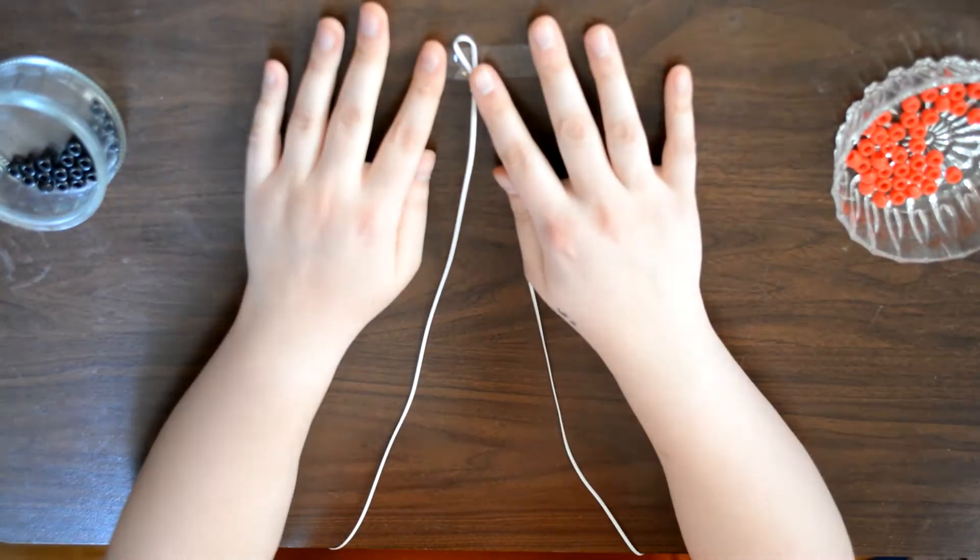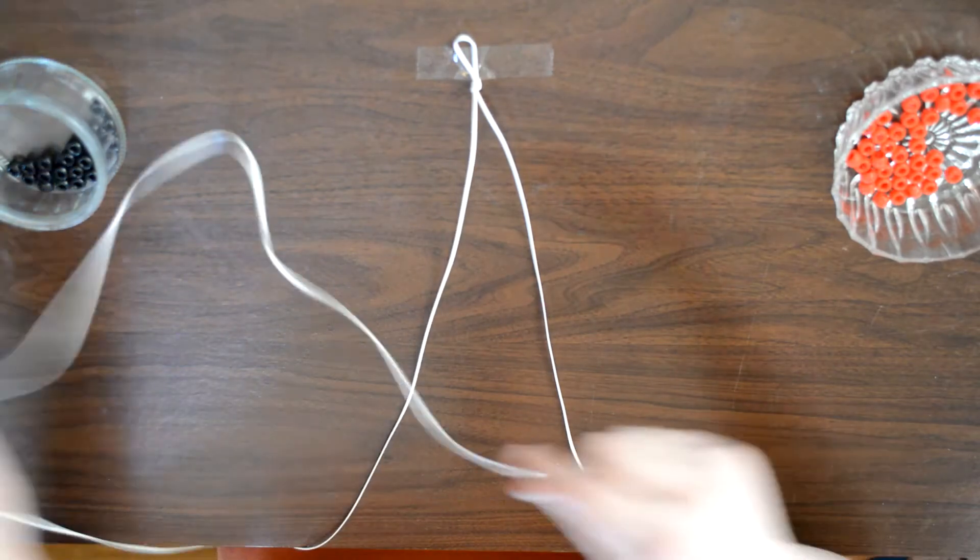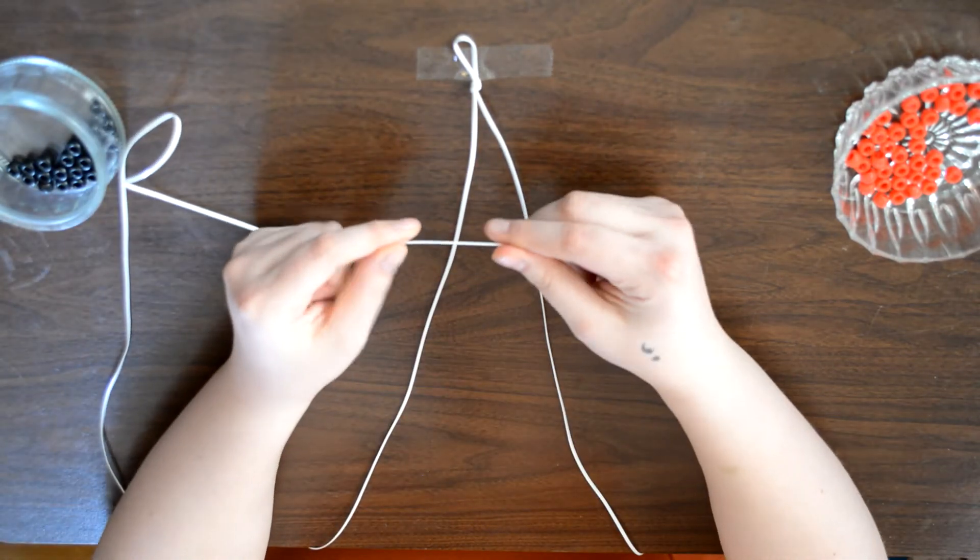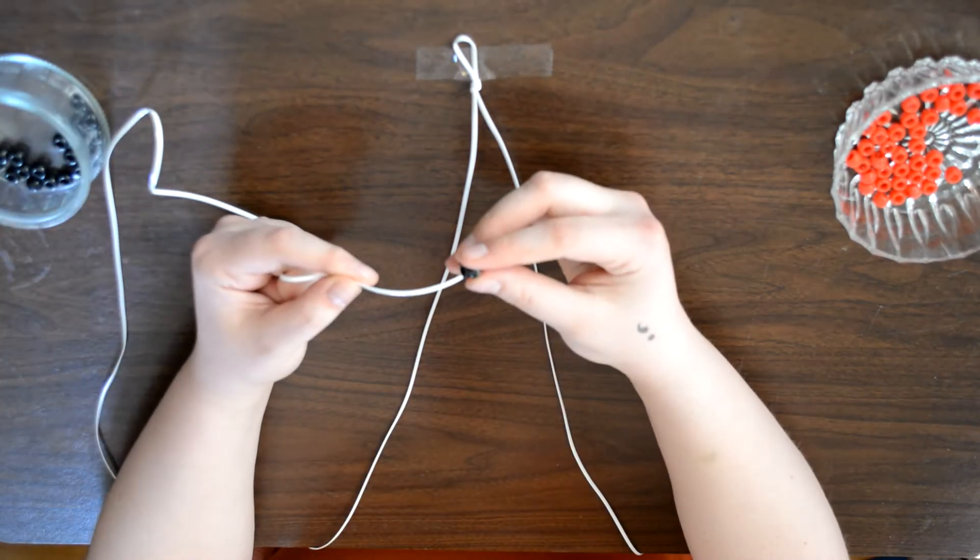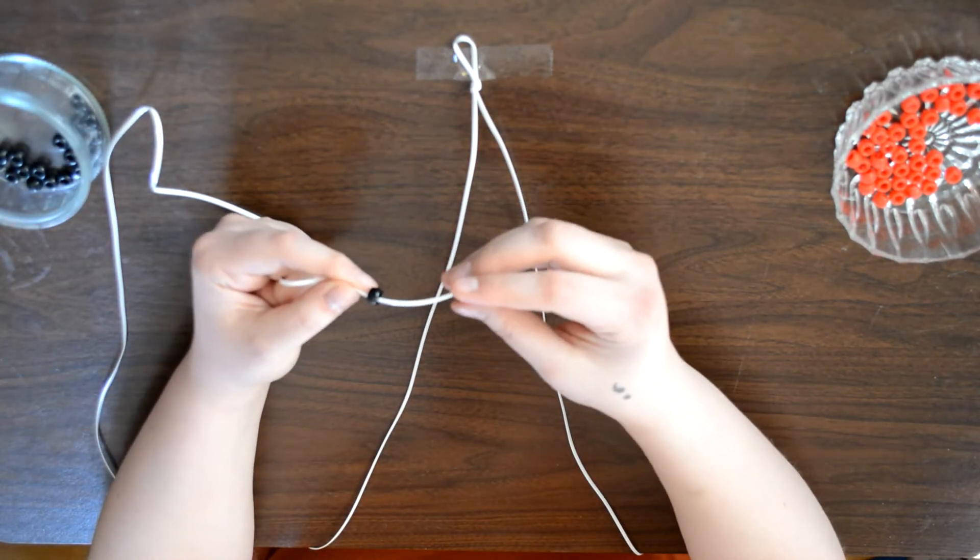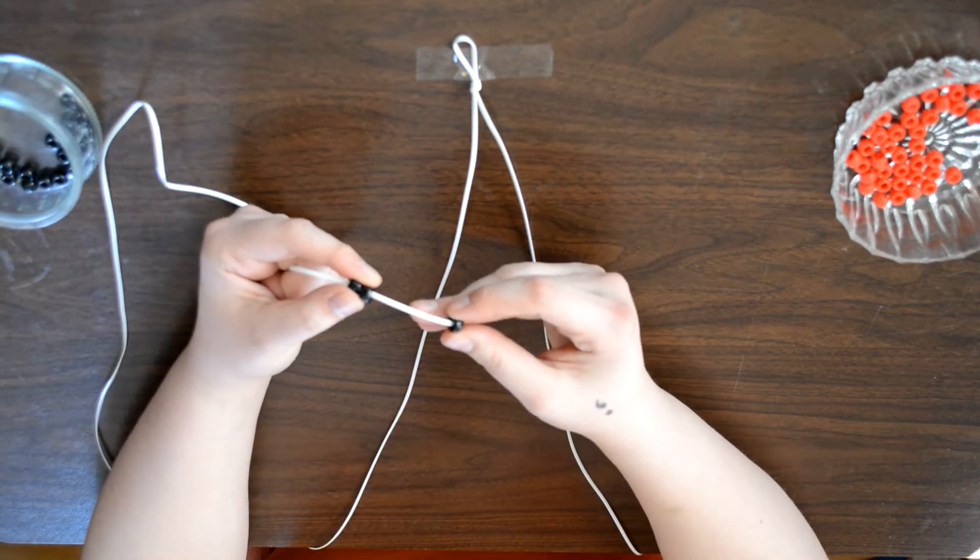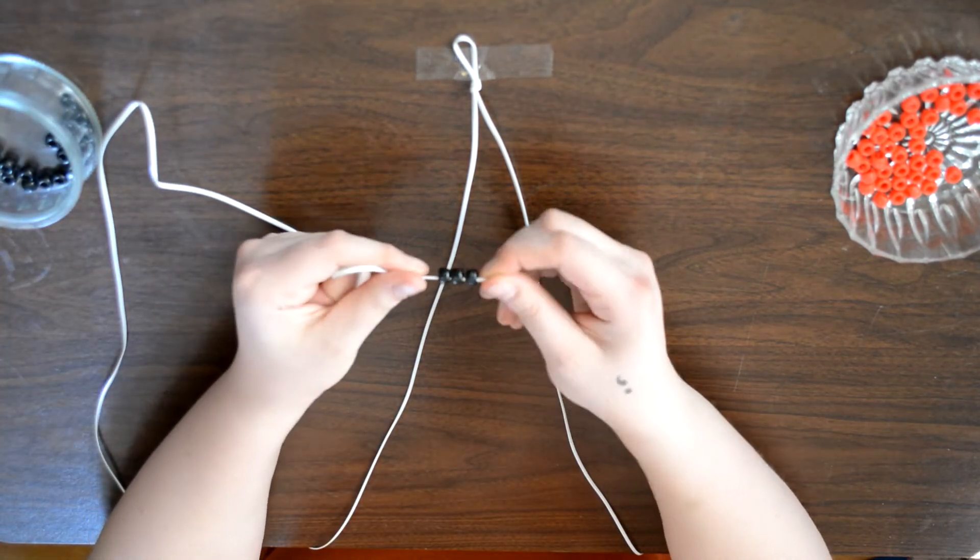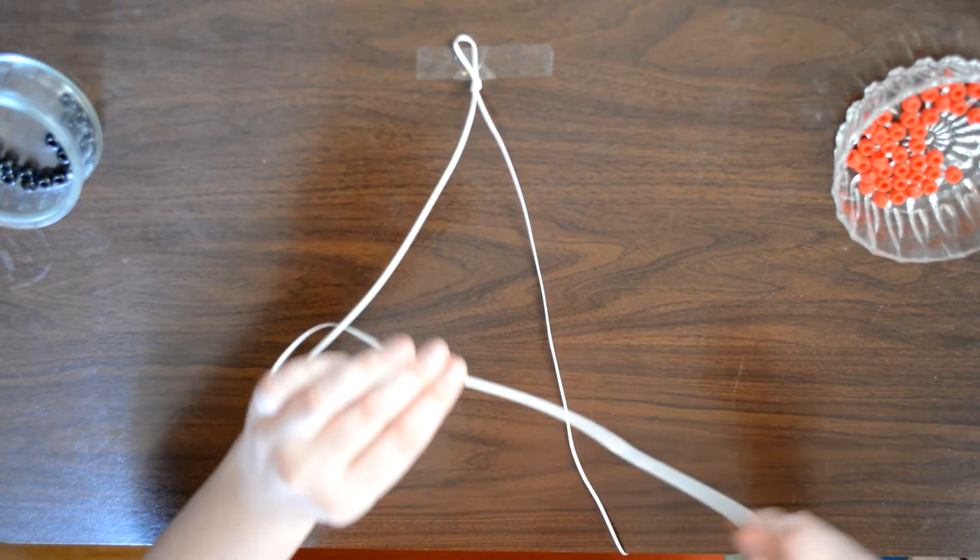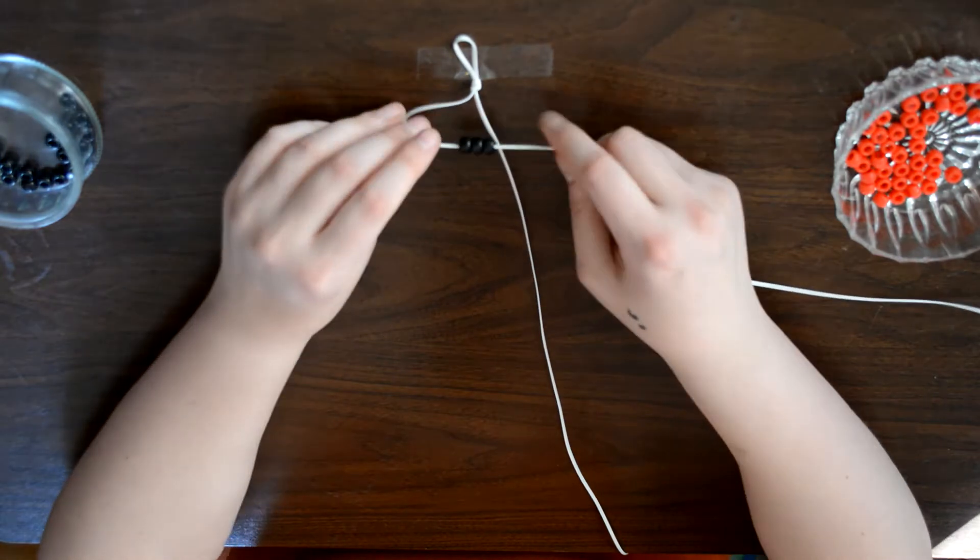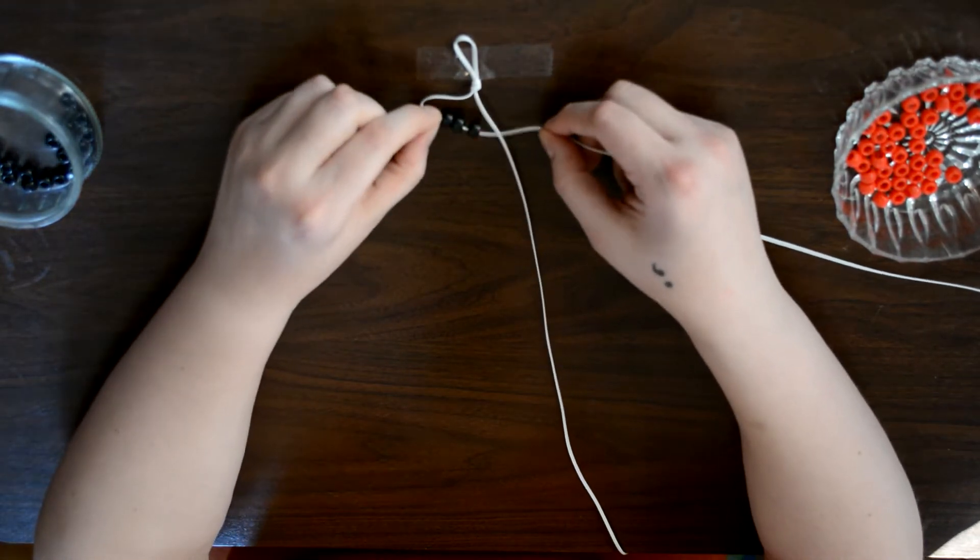First things first, we're taking our left side and we're taking the end. The first thing we want to do is put three black beads on the left side. So three black beads on the left side, we're going to pull them all the way to the top.